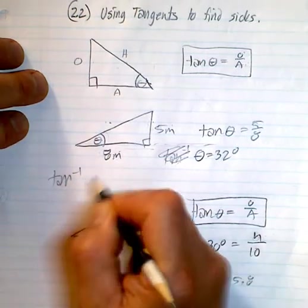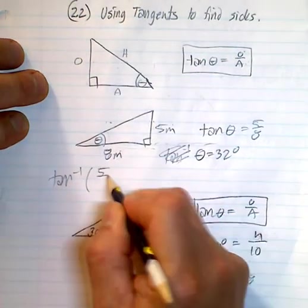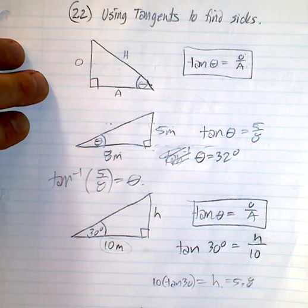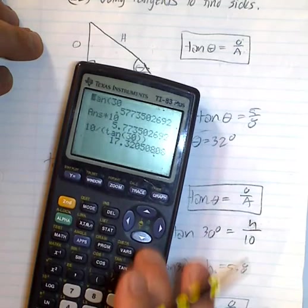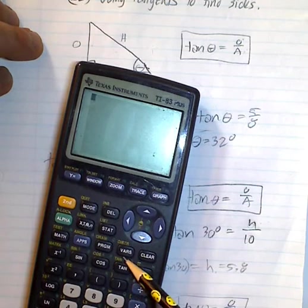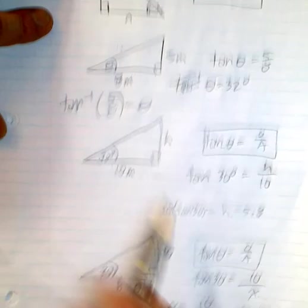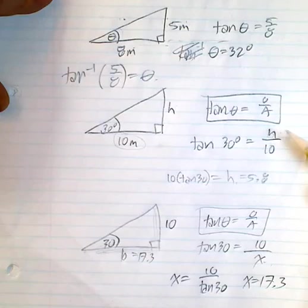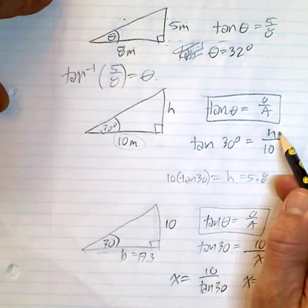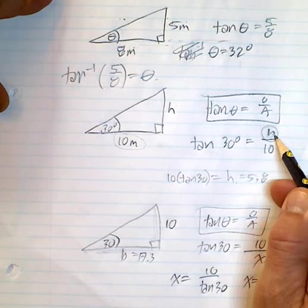So tan inverse of 5 over 8 equals theta, and that gave me 32 degrees. And the tan inverse button is right above the tan button. Here we're looking for the height. You have two situations: you're either going to have the base and you're looking for the height, so it's on top, or you're looking for the number on the bottom. Top bottom, two different ways to solve.